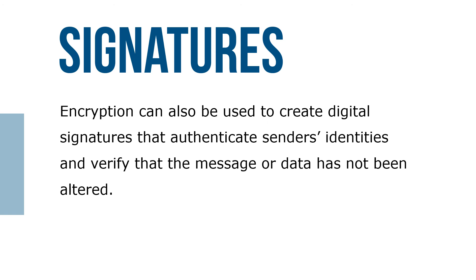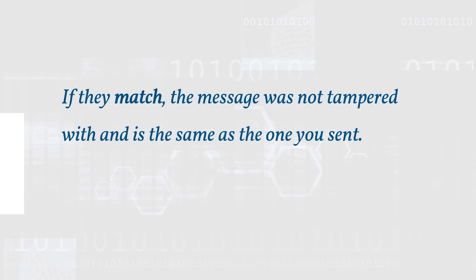Encryption can also be used to create digital signatures that authenticate senders' identities and verify that the message or data has not been altered. When you send an encrypted message with a digital signature, the recipient uses your public key to decrypt the message, then uses the same algorithm to hash the message and create another version of the message digest. Next, the recipient uses your public key to decrypt your digital signature and get the message digest you sent. The recipient then compares the two message digests; if they match, the message was not tampered with and is the same one that you sent.